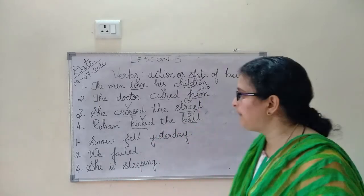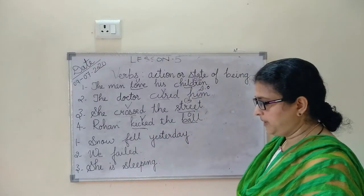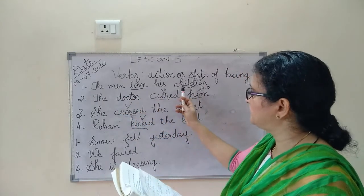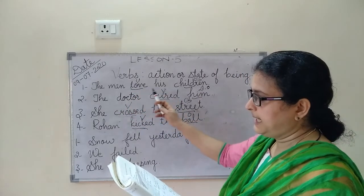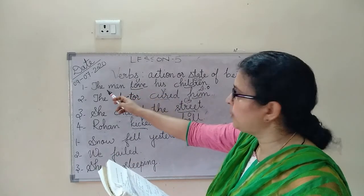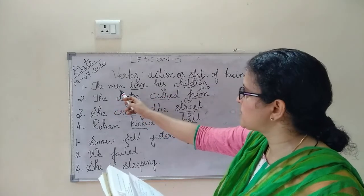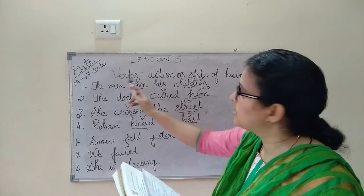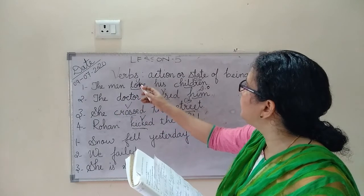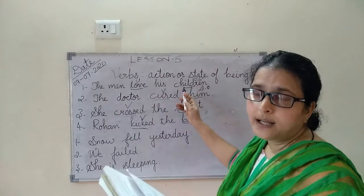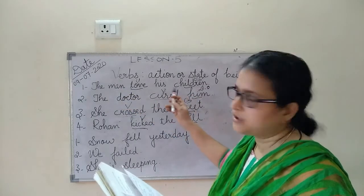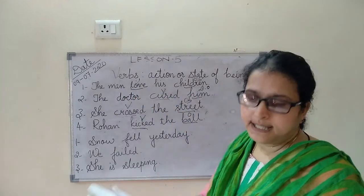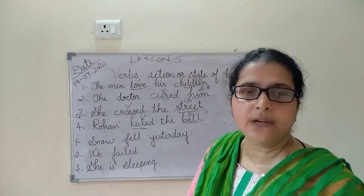Here are a few examples. The man loved his children. The man is performing the action — he is the subject. Loved is the verb, and the children are the object. The sentence is complete, so loved is a transitive verb.